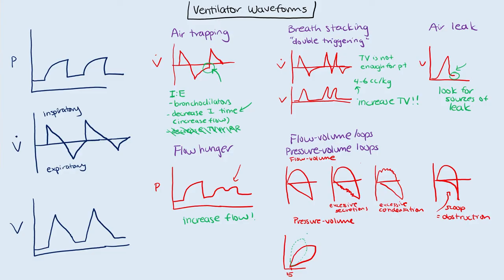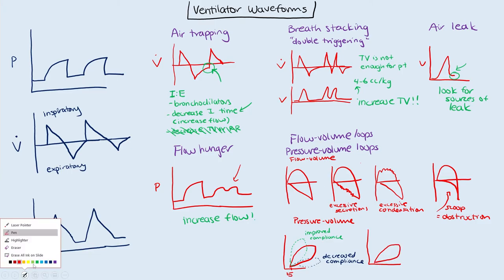If this starts to become more upright, then that's improved compliance. If, on the other hand, it starts to become more flat, then that is a sign of decreased compliance. We may also have a situation where you have a normal airway loop and then it becomes wider than normal, and that would be a sign of increased airway resistance.